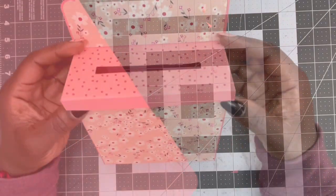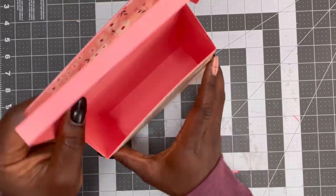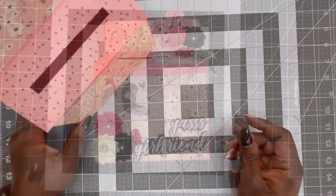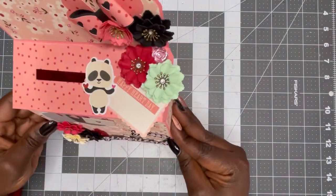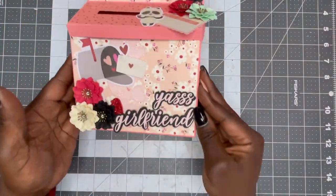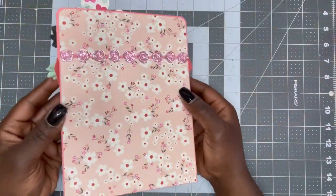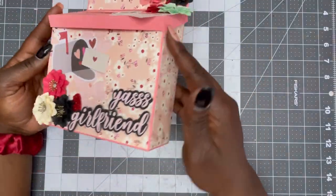After you do that, then your box is complete and go ahead and decorate it to your liking. I did add some of my SVGs that I currently do have in the shop onto my mailbox. So like the cute little bow up top there and the yes, girlfriend. So I do hope you guys enjoyed this. Make sure you give it a like and I'll see you in the next one.